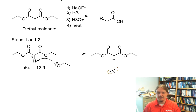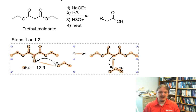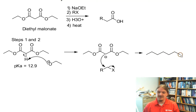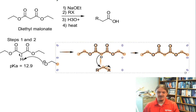The RX alkyl halide probably needs to be a primary alkyl halide, because this step is an SN2 step at the alkyl halide — we are alkylating this enolate. Enolate anions can be alkylated by the appropriate alkyl halides at their alpha positions, and this is just one such example.